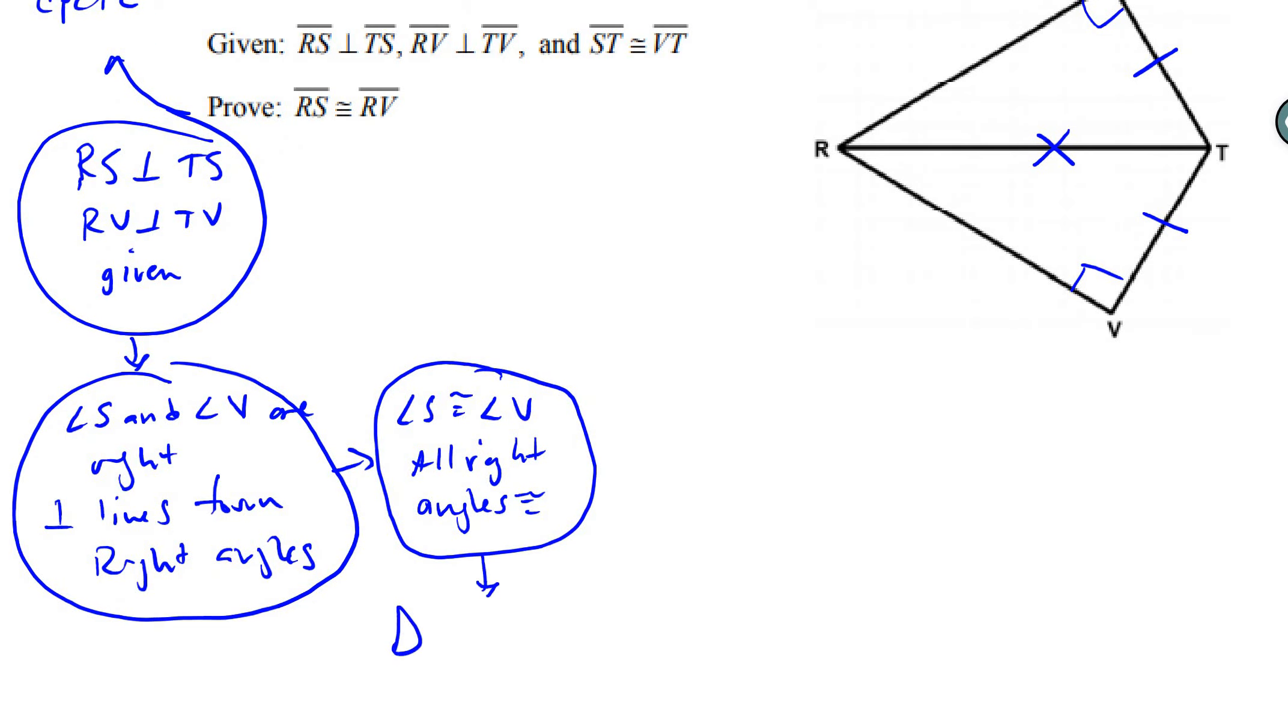So I can say triangle RST and triangle RVT are right. Right angles give us right triangles, so that's part of using hypotenuse leg. I can then say that ST is congruent to VT, given. Let's not make that reflexive mistake like I did before.